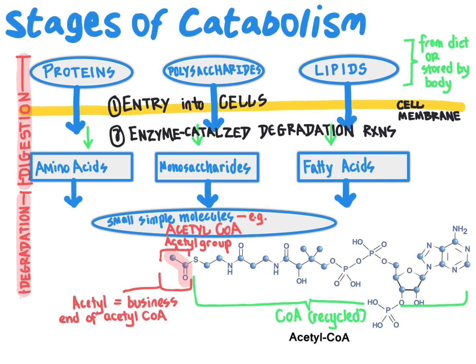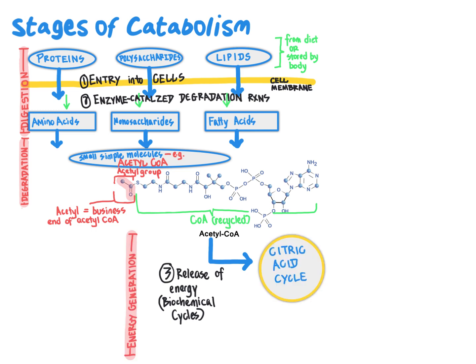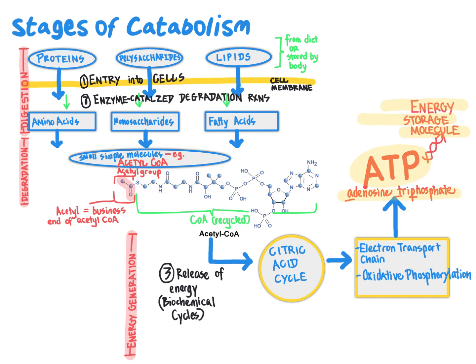What happens to acetyl-CoA? Thus far we haven't said anything about the generation of energy. Well, acetyl-CoA goes through biochemical cycles such as the citric acid cycle, followed by electron transport and oxidative phosphorylation, as processes that ultimately yield a molecule referred to as ATP — adenosine triphosphate. ATP is an energy storage molecule that through the breakage of high energy bonds will release energy that can drive other chemical reactions in the cell that require energy. Our next stop is taking a closer look at the ATP molecule and how it acts to provide energy — we will tackle that topic in the next video.